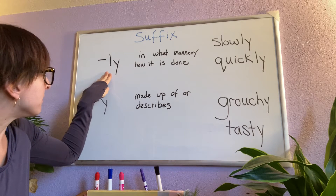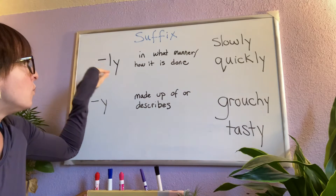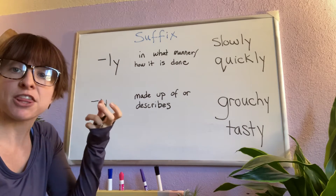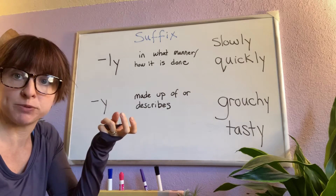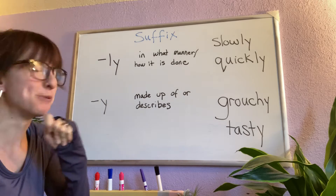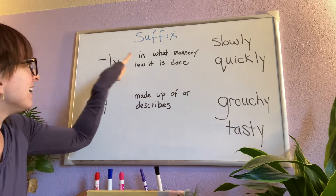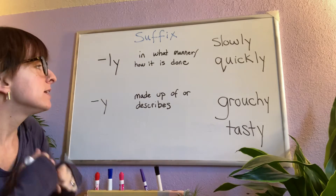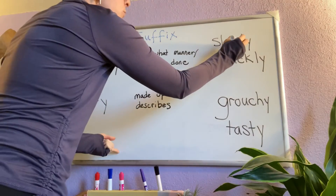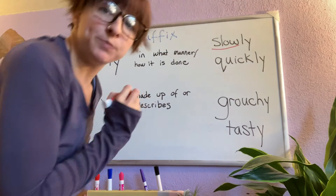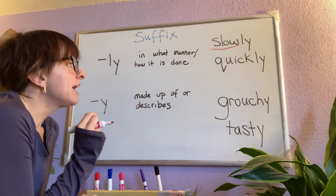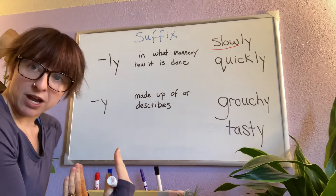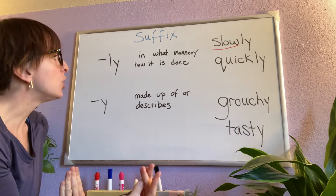One common suffix is -ly. We see -ly added to root words that are verbs. Ly tells in what manner or how something is done. Here's a verb: slow. If you add -ly, it's saying it is done that way — it is done slowly.